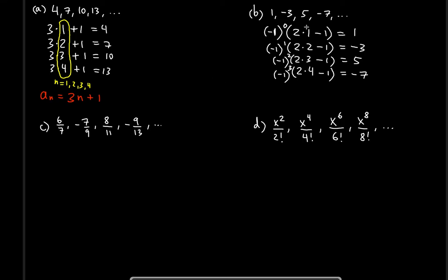These numbers are responsible for the n, and so are the powers. The n values are one, two, three, four, while the powers are zero, one, two, three. For the nth term formula we'll have negative one raised to a power, and 2n − 1 for the absolute values. For the power, when n equals one it must be zero, so the power is n minus one.